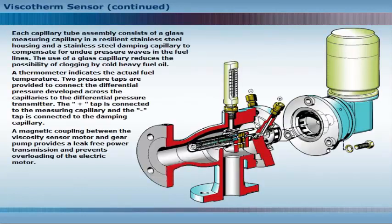Each capillary tube assembly consists of a glass measuring capillary in a resilient stainless steel housing and a stainless steel damping capillary to compensate for undue pressure waves in the fuel lines. The use of a glass capillary reduces the possibility of clogging by cold heavy fuel oil. A thermometer displays the actual fuel temperature. Two pressure taps are provided to connect the differential pressure developed across the capillaries to the differential pressure transmitter.